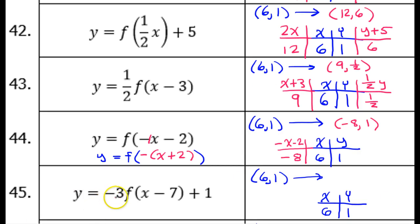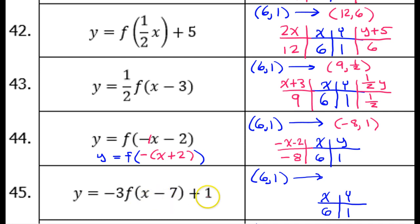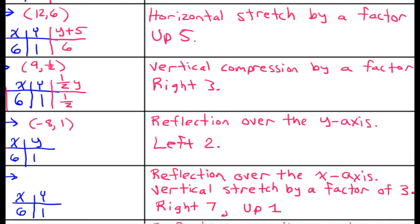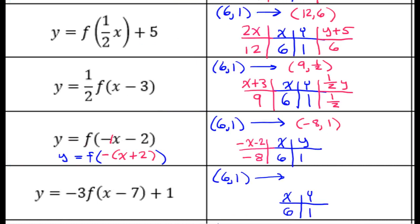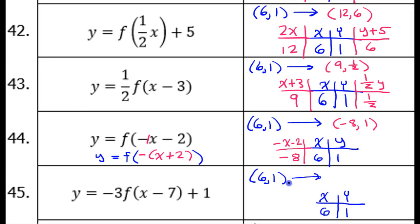Let's take a look at number 45. The negative sign in the front is going to be a reflection over the x-axis. The 3 is its own transformation — a vertical stretch by a factor of 3; don't say by a factor of negative 3, just say by a factor of 3. Then the minus 7 on the inside would be right 7, and the plus 1 would be up 1. So we have: reflection over the x-axis, vertical stretch by a factor of 3, right 7, and up 1. Now let's see what happens to our original point (6, 1).